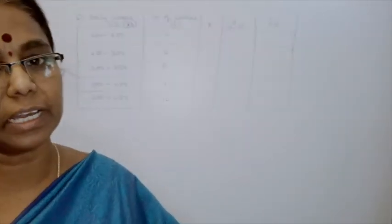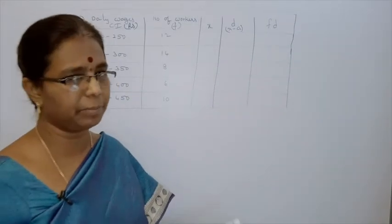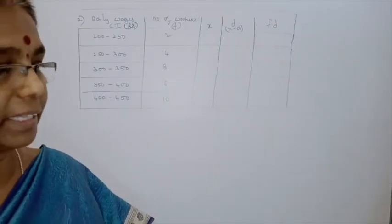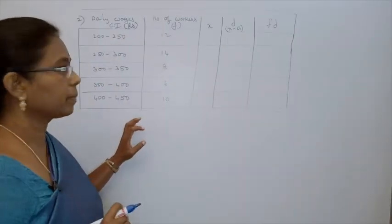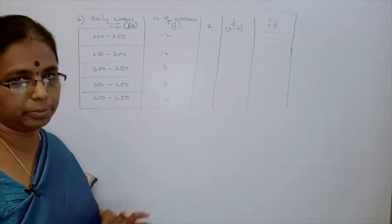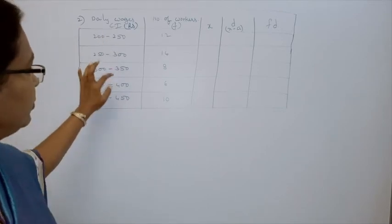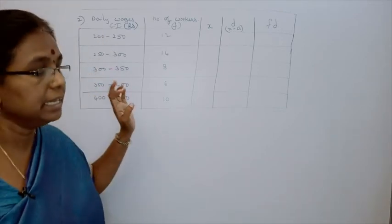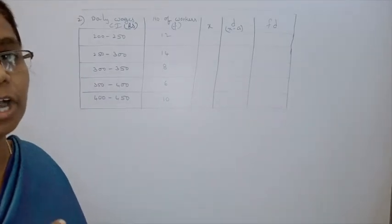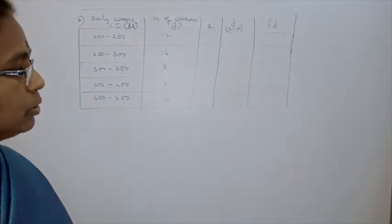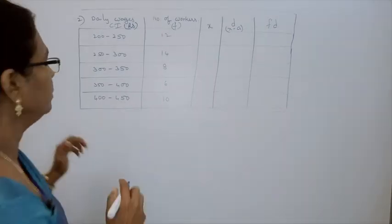Here, we have to take our own method. Which method? From the three methods, you can take any method. But here, which method should we take? We have to take the step deviation method or assumed mean method, because the quantities are large — 200, 250, 300, like that. So we can take the step deviation method or assumed mean method. First, we will go for the assumed mean method.